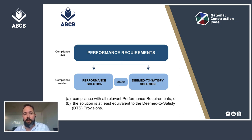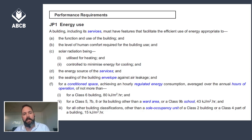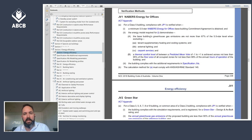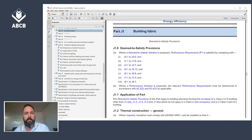A performance solution — our focus for today — is achieved by demonstrating compliance with all the relevant performance requirements, or demonstrating that the solution is at least equivalent to the deemed-to-satisfy provisions. When applying this to Section J energy efficiency provisions, on your screen you can see an example of applicable performance requirements. These performance requirements can be achieved by either a performance solution or a deemed-to-satisfy solution using a verification method as the assessment method.